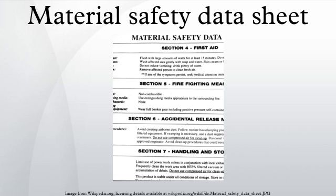Section 2, Hazards identification. 2.1. Classification of the substance or mixture. 2.2. Label elements. 2.3. Other hazards. Section 3, Composition/information on ingredients. 3.1. Substances. 3.2. Mixtures.